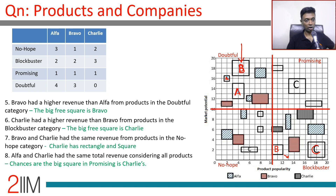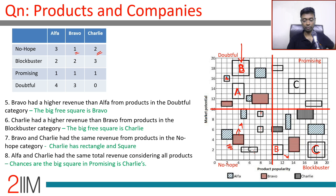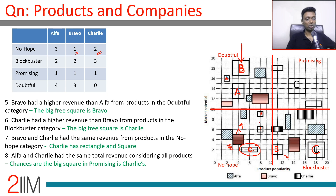Bravo and Charlie had the same revenue from products in the No Hope category. In No Hope, Bravo has one product and Charlie has two. Bravo's single box is roughly four square units in area. So Charlie's two boxes must also total four units — the large rectangular blob of about three square units is definitely Charlie, and one of the remaining two smaller boxes is Charlie; the other must be Alpha.